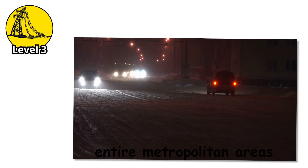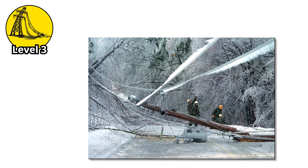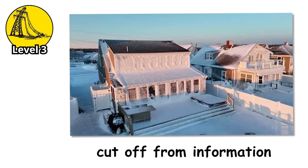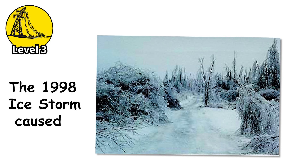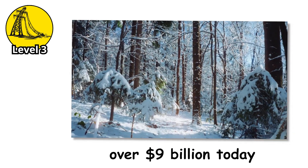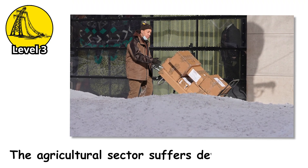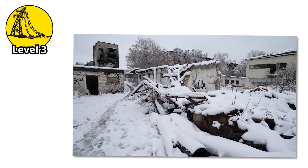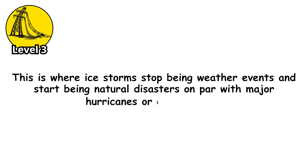Entire cities go dark — not neighborhoods, not districts, but entire metropolitan areas losing power simultaneously. Hospitals switch to emergency generators. Water treatment plants struggle to maintain operations. Cell towers without backup power go offline. Communication infrastructure collapses. People become isolated in their own homes, cut off from information, unable to know when power will return. The economic impact becomes staggering. The 1998 ice storm caused an estimated $5.4 billion in damage — adjusted for inflation, over $9 billion today. Insurance claims overwhelm companies. Businesses close for weeks. The agricultural sector suffers devastating losses as orchards and maple sugar operations, some generations old, are destroyed overnight. This is where ice storms stop being weather events and start being natural disasters on par with major hurricanes or earthquakes.